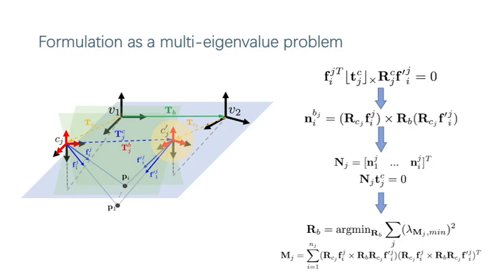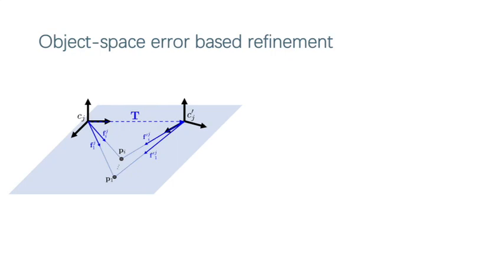As I stated before, rotation translation ambiguity can easily lead to local minima in the algebraic objective error, especially if they have a very limited field of view. In an aim to solve this problem, we introduce an object-space error-based iterative refinement step.